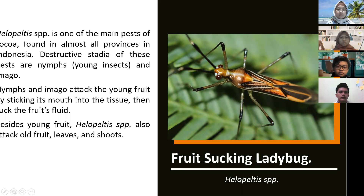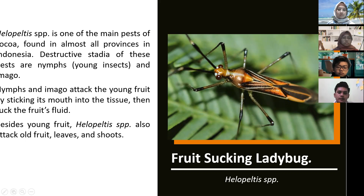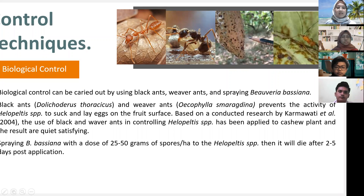Helopeltis sp. is one of the main pests of cocoa, found in almost all provinces in Indonesia. The destructive stages of this pest are nymphs and imago. Nymphs and imago attack young fruits from inside, and Helopeltis sp. also attacks old fruits, leaves, and shoots.